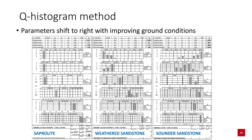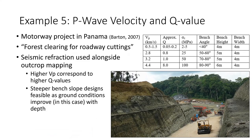This shows an example of the Q-histogram method, in which logging is done statistically or probabilistically as you map a slope or drill core. Parameters shift to the right with improving ground conditions. In this example of a motorway project in Panama, the objective was to determine how much forest clearing was required for roadway cutting. Seismic refraction was used alongside outcrop mapping. Higher P-wave velocity values corresponded to higher Q-values in the Q-system, and steeper bench slope designs were feasible as ground conditions improved with depth.